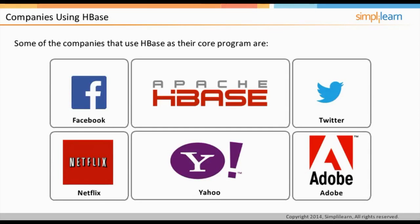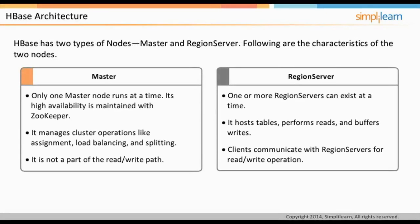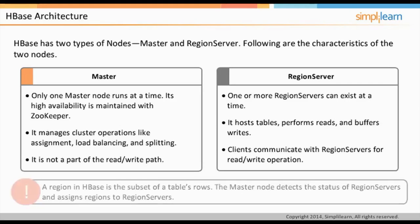HBase has two types of nodes: master and region server. There is only one master node running at a time, whereas there can be one or more region servers. The high availability of the master node is maintained with ZooKeeper. The master node manages cluster operations like assignment, load balancing, and splitting, and is not part of the read or write path. The region server hosts tables, performs reads, and buffers writes. Clients communicate with the region server for read and write. A region in HBase is the subset of a table's rows. The master node detects the status of region servers and assigns regions to them.